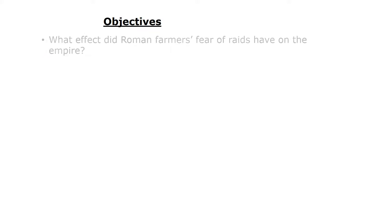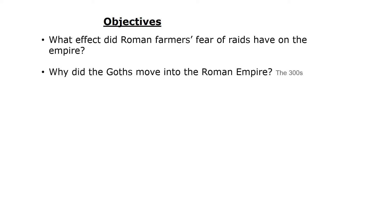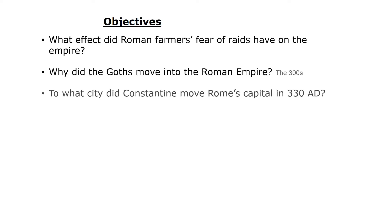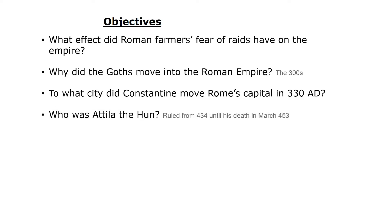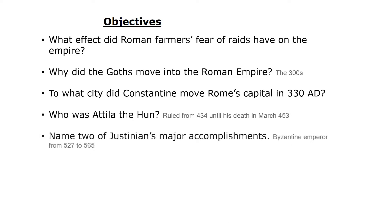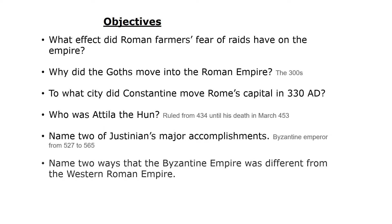Your Objectives: What effect did the Roman farmers' fear of raids have on the empire? And why did the Goths move into the Roman Empire? To what city did Constantine move Rome's capital in 330 AD? And who was Attila the Hun? Name two of Justinian's major accomplishments, and name two ways that the Byzantine Empire was different from the Western Roman Empire.